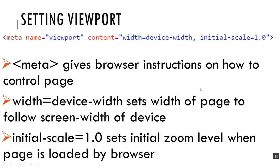To set the viewport, you use a meta tag. The meta tag is generally for information that's not specifically what's displaying on the page, but additional information that can be used. We'll give the meta tag the name 'viewport', and set the content so that width equals device-width — that way the width of the page follows however wide the device is. We also want initial-scale set to 1.0 so the zoom is at 1.0 when the page is loaded.